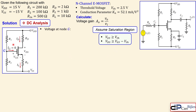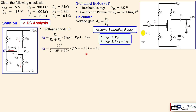The node voltage at gate G is calculated using the voltage divider rule, accounting for VSS. This gives VG = R2 / (R1 + R2) × (total voltage across the network) + VSS. Substituting the values yields VG = −5 V.